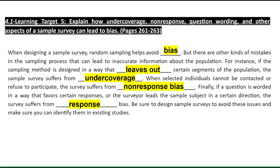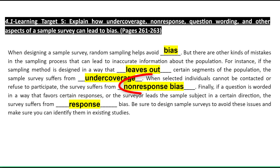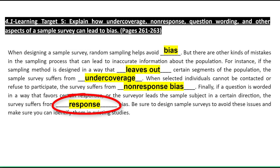For instance, if a sampling method is designed in a way that leaves out certain segments of the population, the sample survey suffers from under coverage. When selected individuals cannot be contacted or refuse to participate, the survey suffers from non-response bias. Finally, if a question is worded in a way that favors certain responses, or the surveyor leads the subject in a certain direction, the survey suffers from response bias.